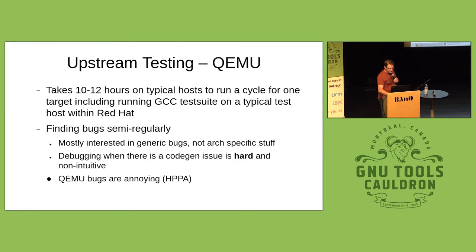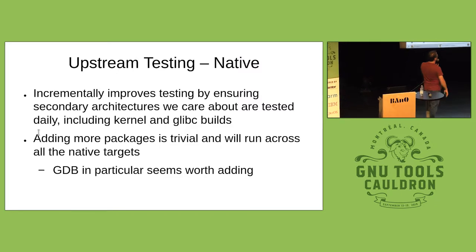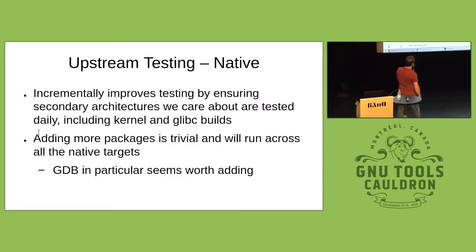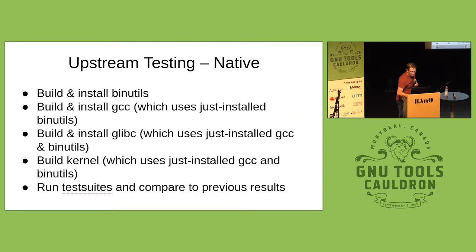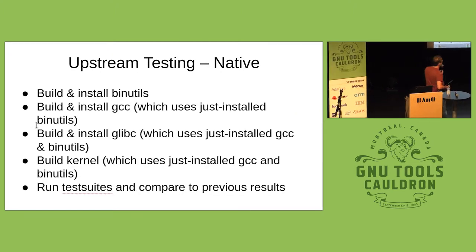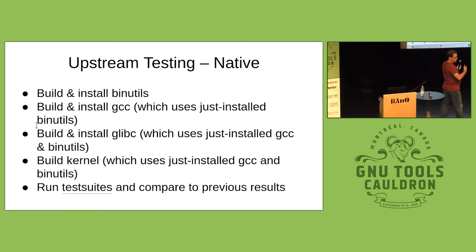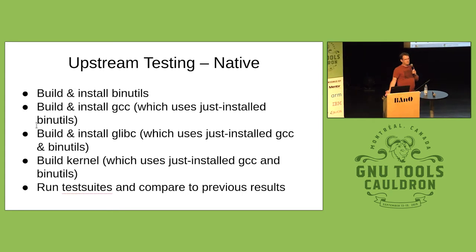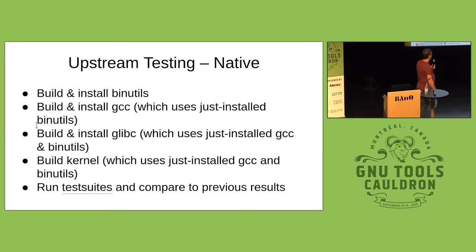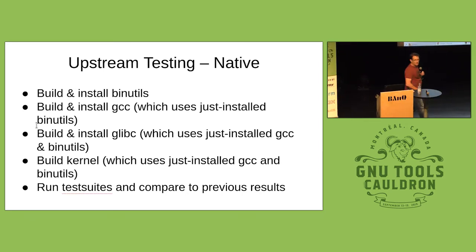I think I got things out of order here — this is what you get for changing your deck late at night. The native testing looks very much like what you'd do manually: build and install binutils, build and install GCC with the standard bootstrap, build and install glibc, build the kernel. Nothing radical. We've all done it. Run the test suite, compare the previous results. That's easily automated.